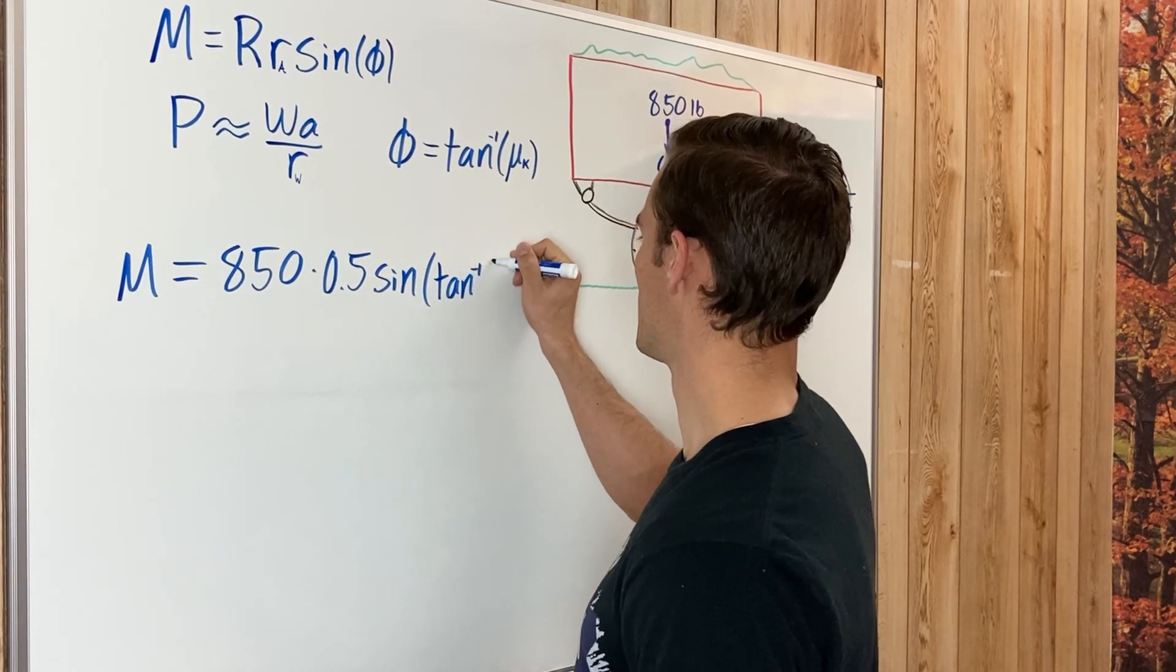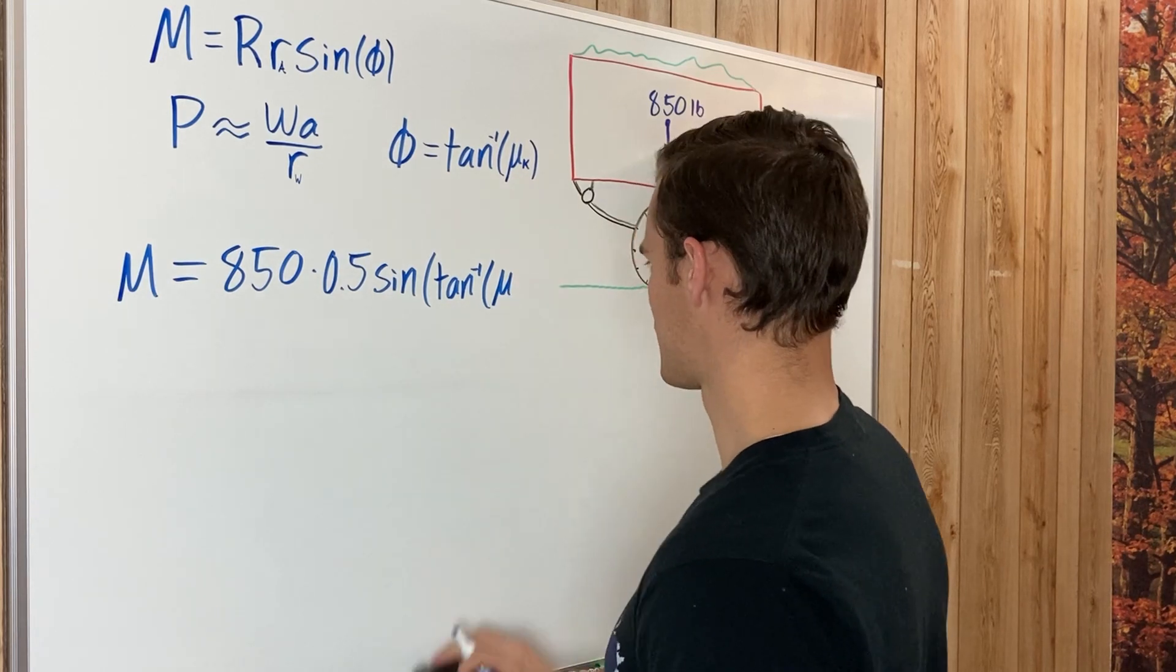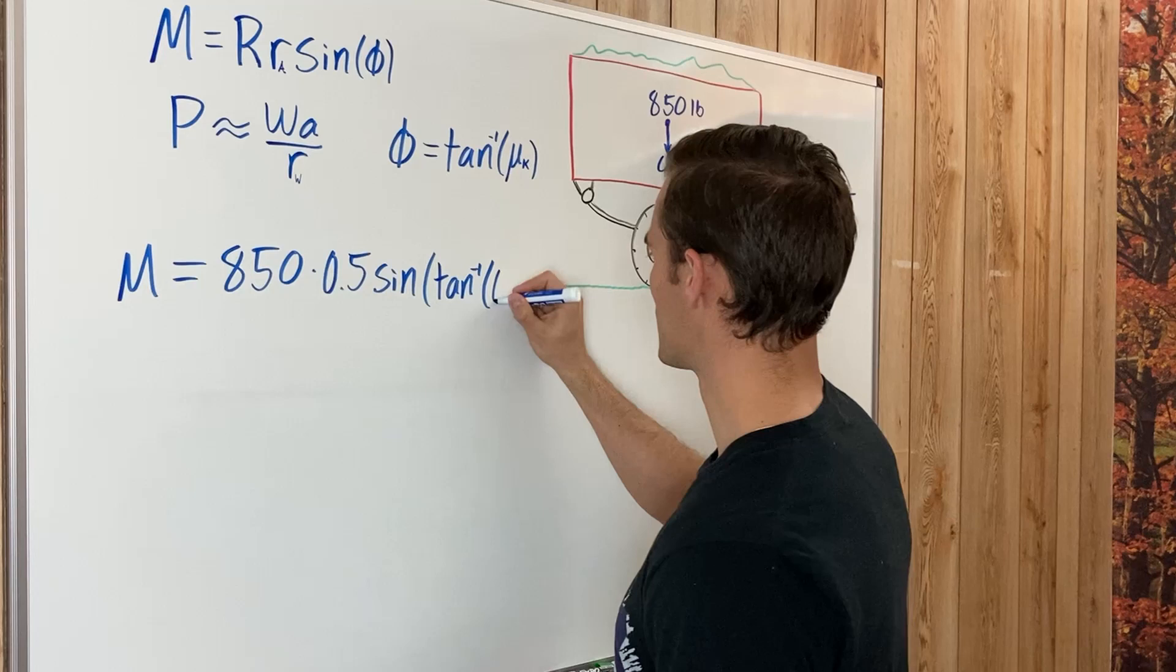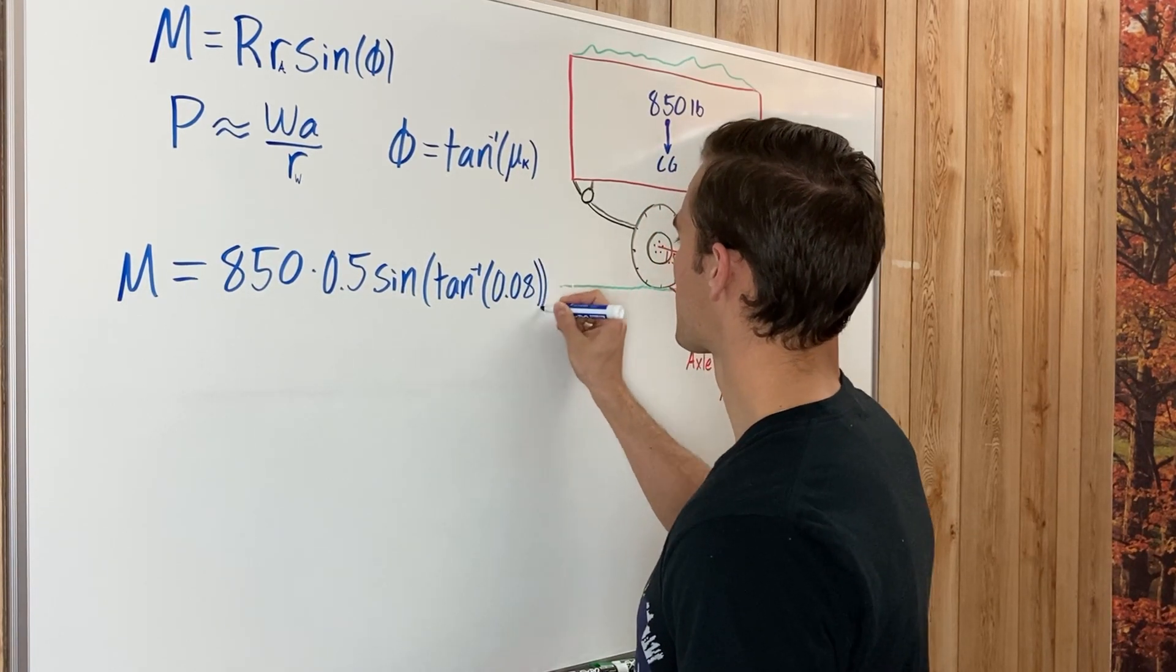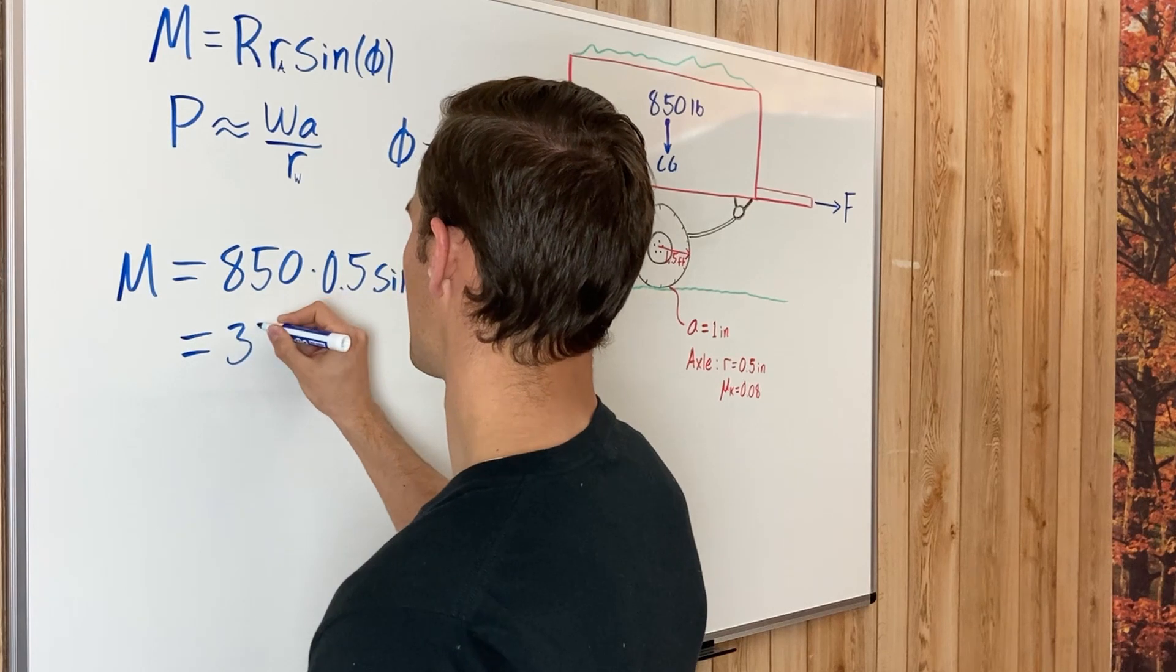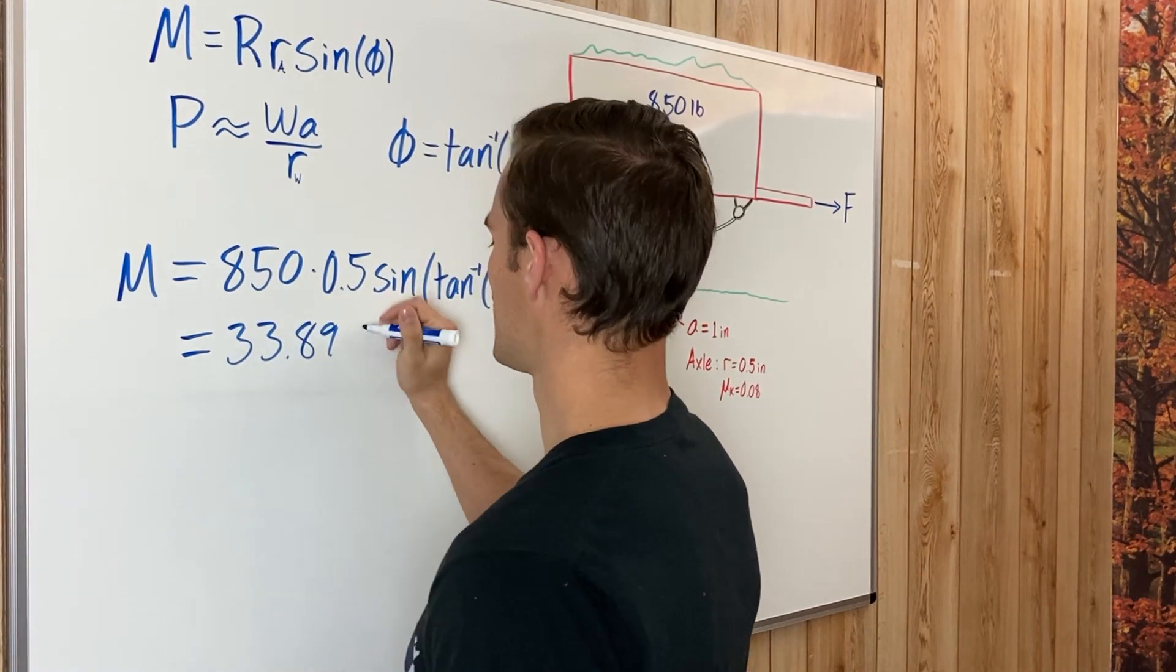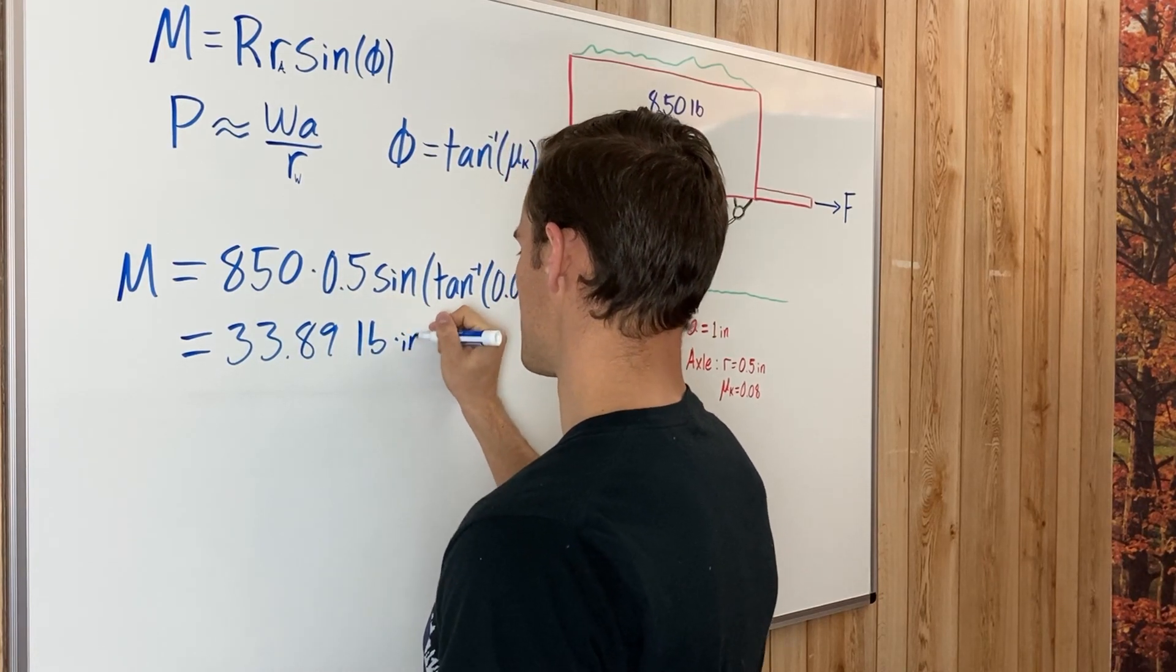...the arc tangent of the coefficient of kinetic friction, which is given to us as 0.08. Plugging that into our calculator, we get that that is 33.89 pound inches, because we left our measurement here for the axle in inches.